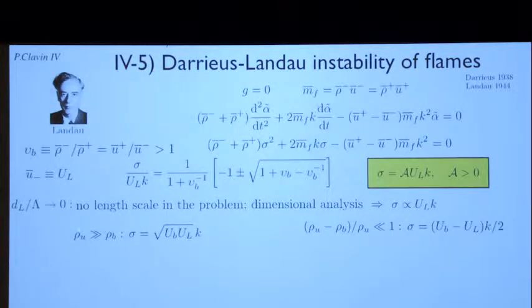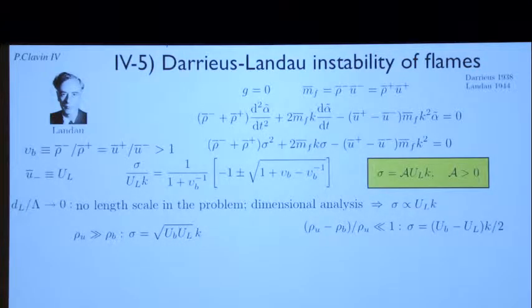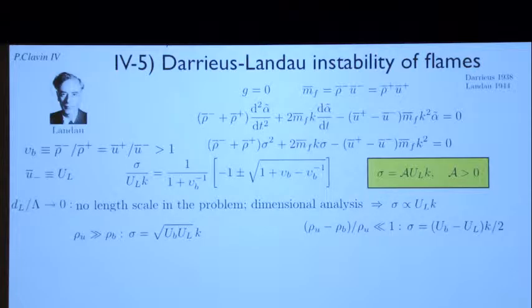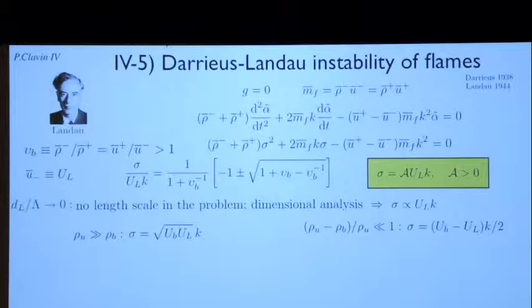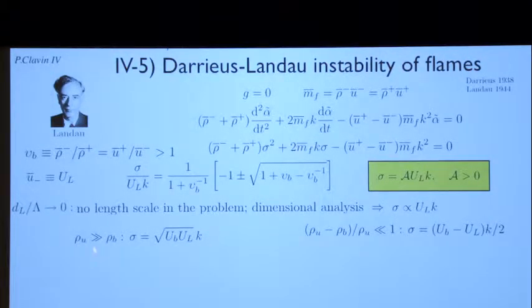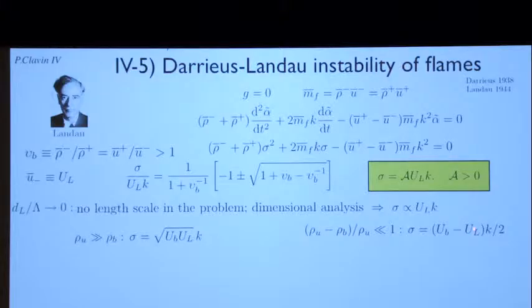For example, if there is a very large density ratio, this equation simplifies to sigma equals square root of U_B U_L times k — much easier to keep in mind. And in the opposite limit, where the difference of density is small, you find simply the difference of the velocities as a factor divided by two. Those are the two limits that are easy to keep in mind.